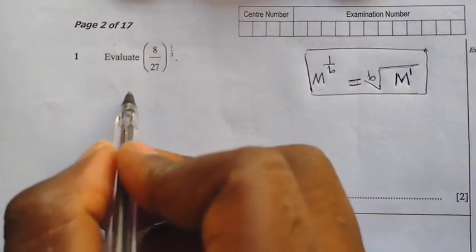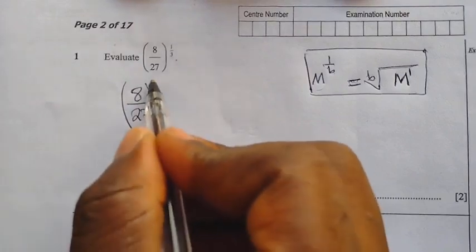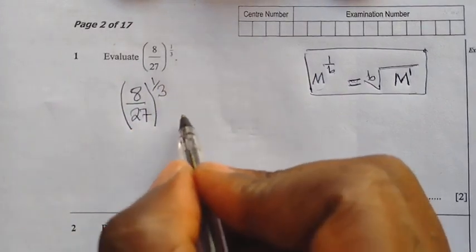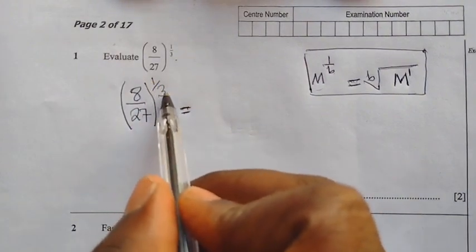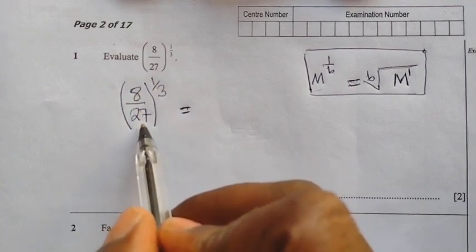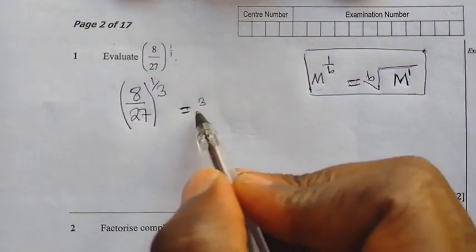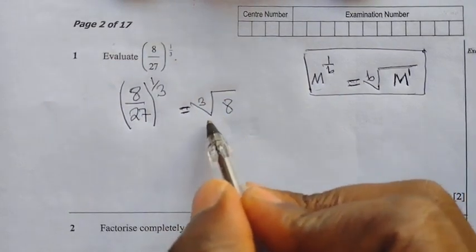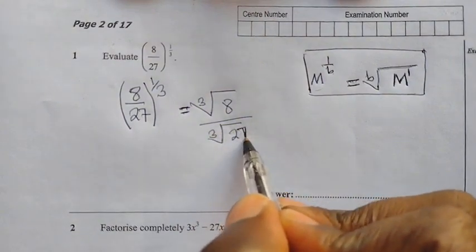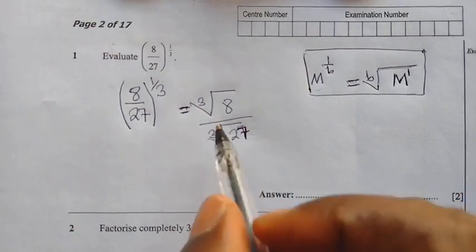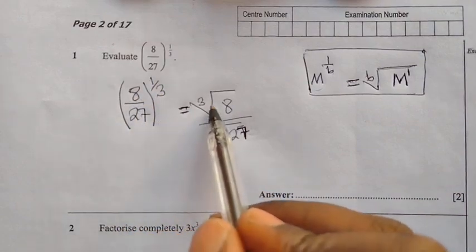What we are going to do is write 8 over 27 raised to the power of 1 over 3. Remember what I said — this denominator 3 represents the third root of 8 and the third root of 27. So we are going to write the third root of 8 divided by the third root of 27. The 1 over 3 is affecting both 8 and 27.